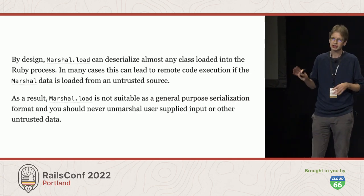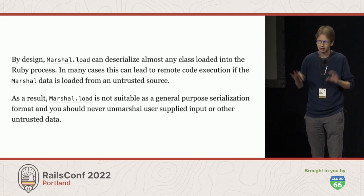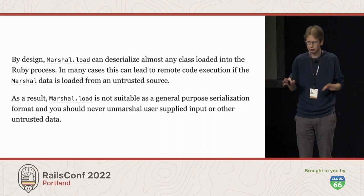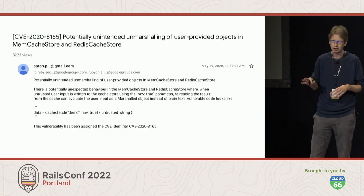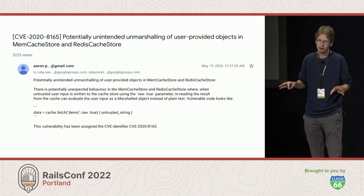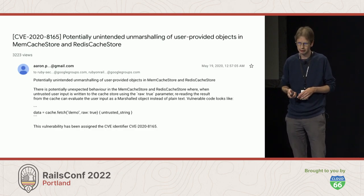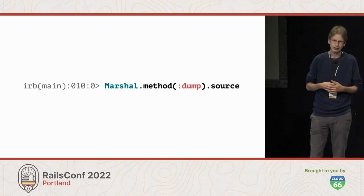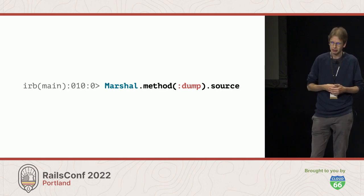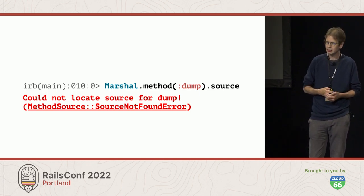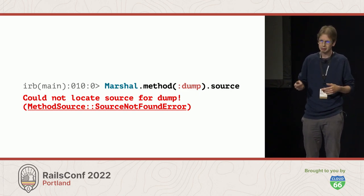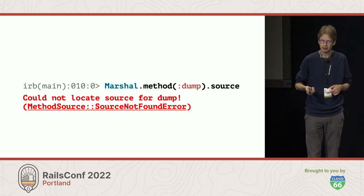The problems with Marshall are well known — Marshall is a sharp knife. The Marshall documentation says Marshall.load is not suitable as a general purpose serialization format and you should never unmarshall user-supplied or other untrusted data. There was a CVE in 2020 related to exactly MemcacheStore and RedisCacheStore. This is a known issue and having it in the cache can be dangerous. You might try to look at the code for Marshall and be disappointed — it's not written in Ruby, it's written in C. There's very little out there talking about how Marshall actually works, so before you can remove Marshall you have to figure out what it's actually doing.